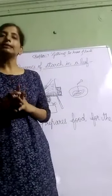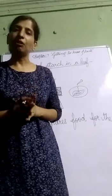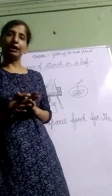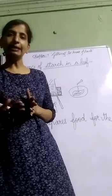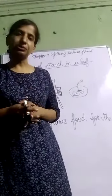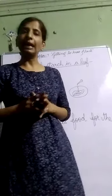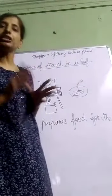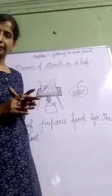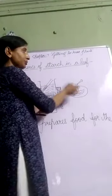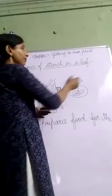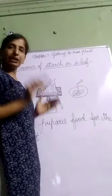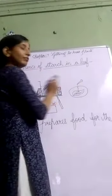Students, the iodine test is for the presence of starch. When any food material contains starch — for example, potato or bread — if you put iodine solution on it, it will give blue-black color. So iodine test is for the detection of starch in any food material. Here in the leaf, we use iodine solution, and when we pour it on the leaf, it gives blue-black color, which shows that the leaf contains starch.